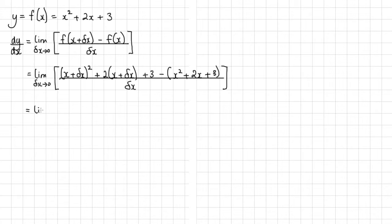Okay, so we've got the limit as delta x tends to zero. So now we need to expand this bracket here. So I'll get x squared plus 2x delta x plus delta x squared.